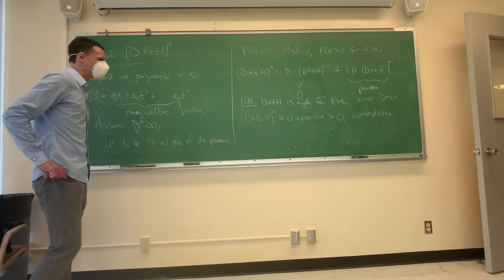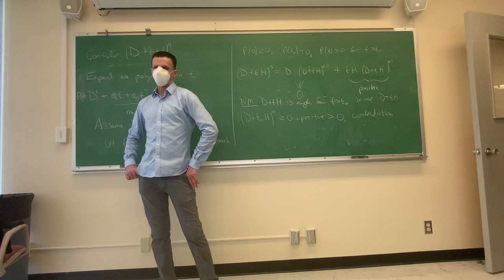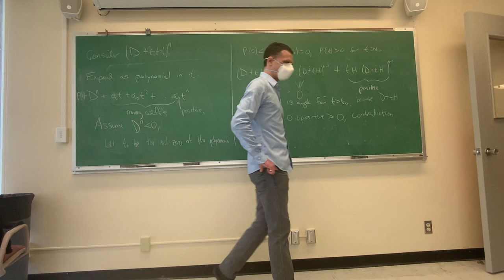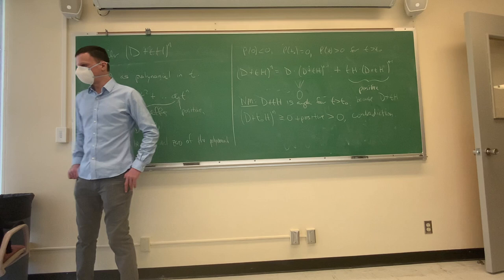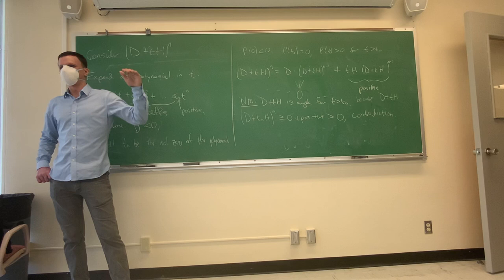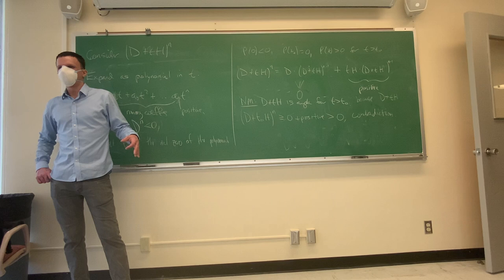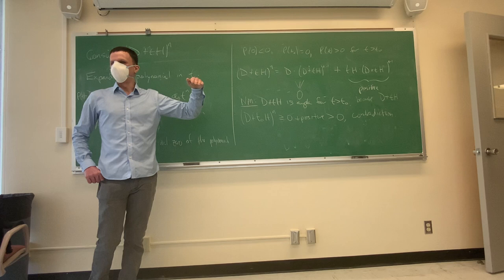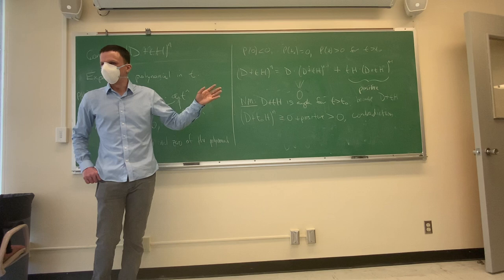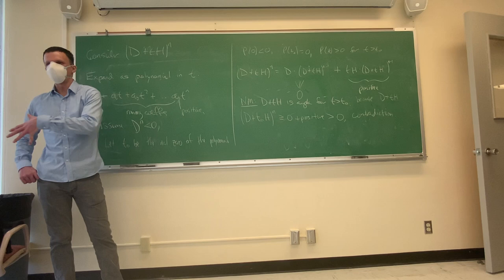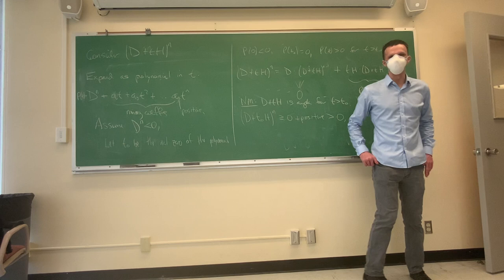Question: are we doing induction on the dimension of V? The answer is we're doing induction on the ambient dimension. The point is that D restricts to a nef divisor on everything smaller by the inductive hypothesis. You restrict to codimension one, and in codimension one it's non-negative on all curves, so it's an nef divisor there. So we're inducting not on the dimension of the subvariety but on the dimension of the ambient variety.